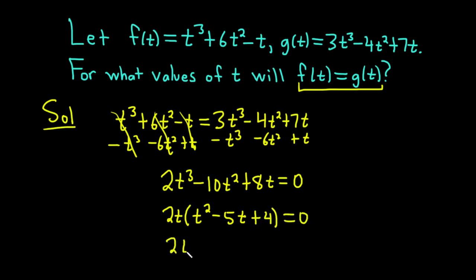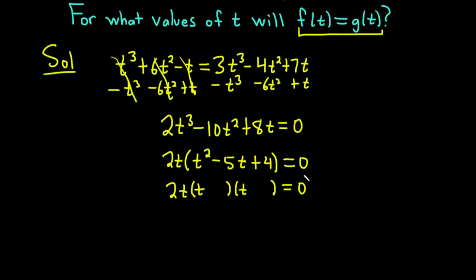Let's keep going. This is 2t. This quadratic should factor. Let's try to do it via guessing. We'll put a t here in the first parentheses and a t here in the second parentheses. That's because t times t is t squared. Now we need two numbers that multiply to positive 4 but add to the middle term which is negative 5. So 4 and 1.